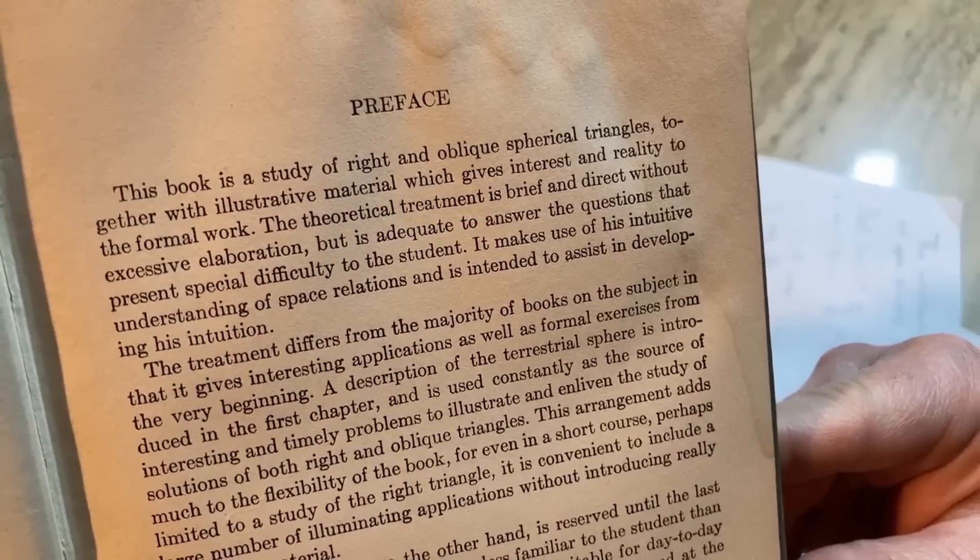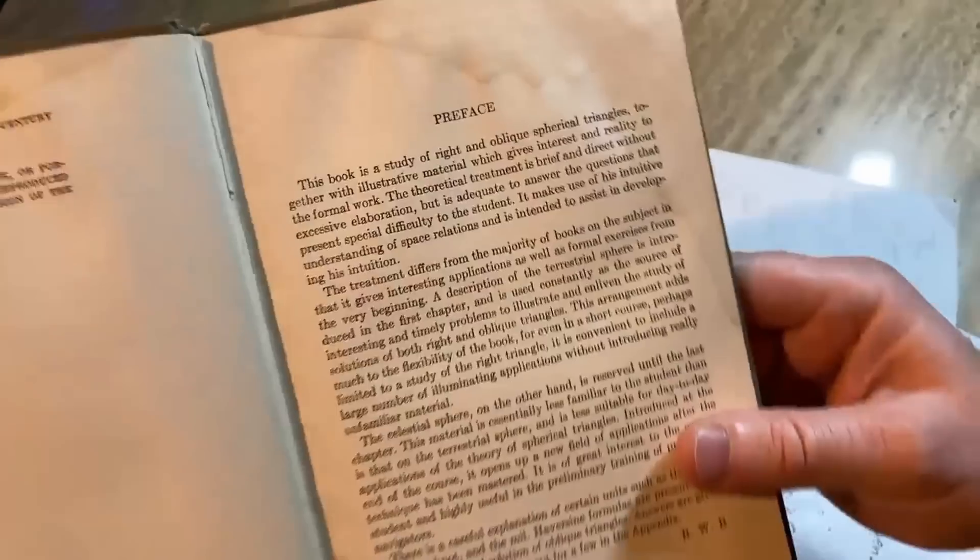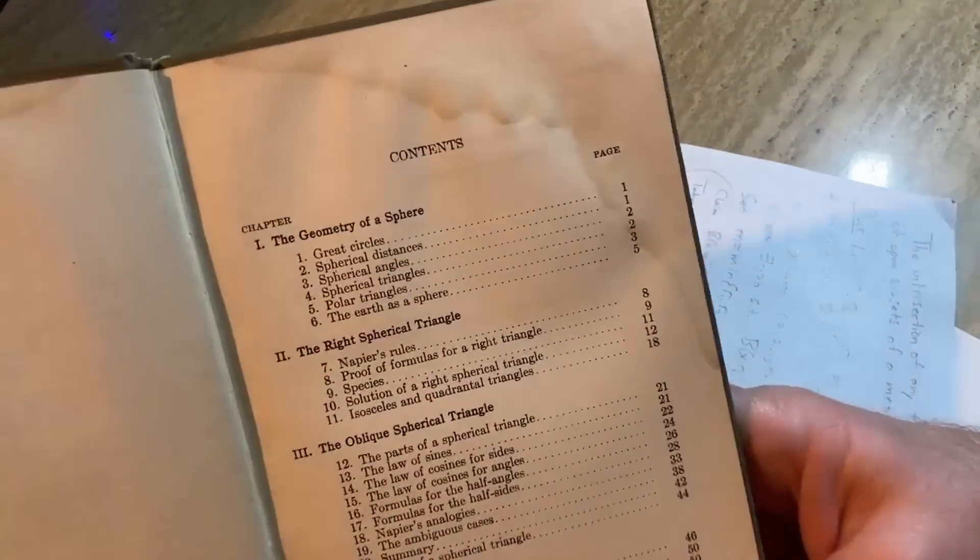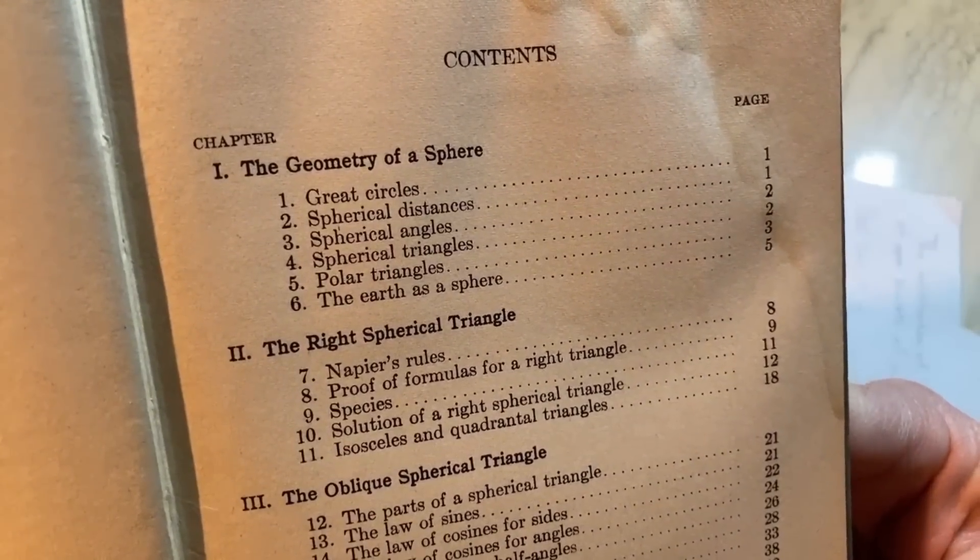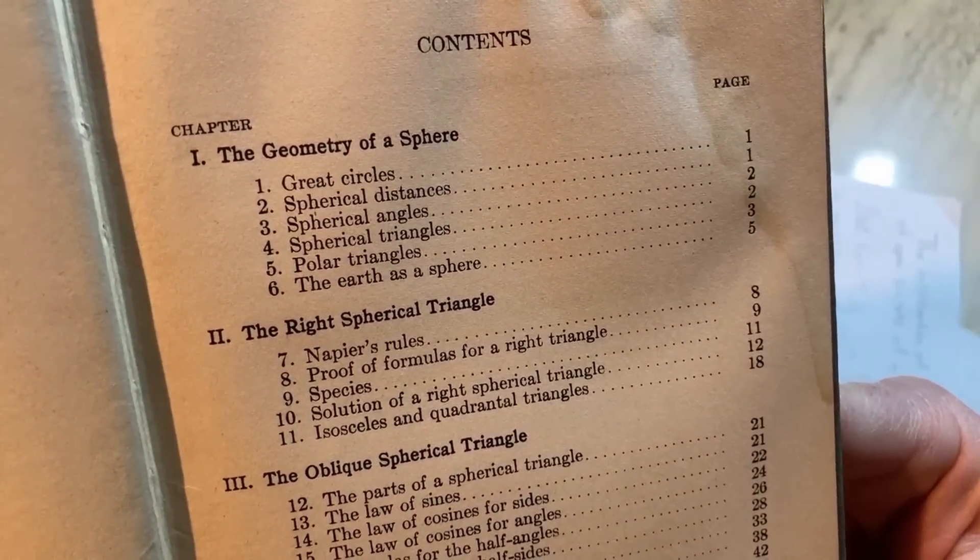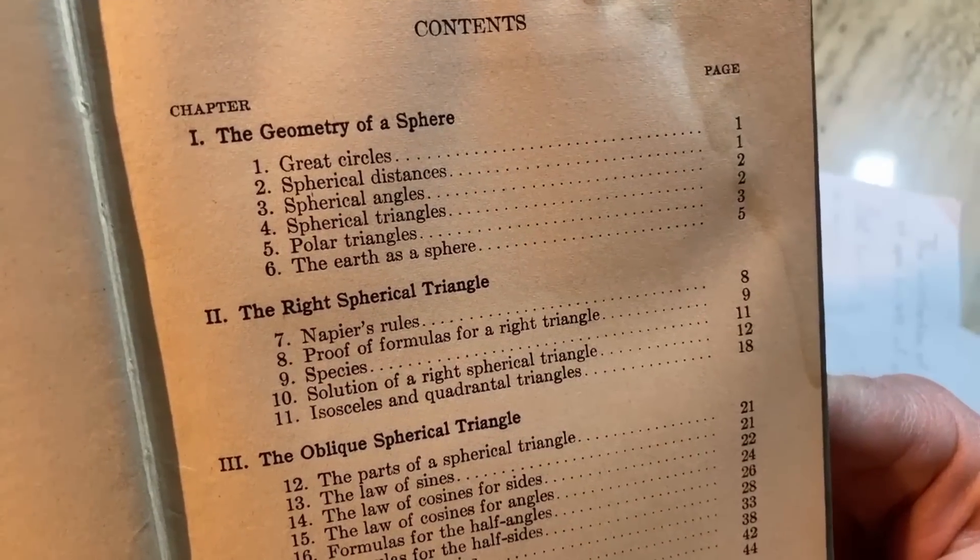The theoretical treatment is brief and direct without excessive elaboration, but is adequate to answer the questions that present special difficulty to the student. It makes use of his intuitive understanding of space relations and is intended to assist in developing his intuition. Cool. Look at the contents: the geometry of a sphere.